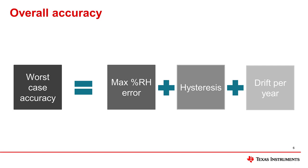Some datasheets will specify a maximum percentage relative humidity that includes hysteresis, while others will leave it as two separate values. However, it is important to understand the individual components of system accuracy. This worst-case accuracy applies to the HDC3X family of relative humidity sensors.